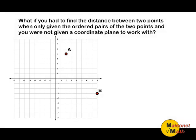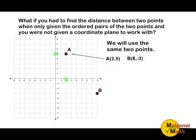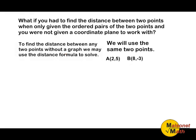Now, what if you had to find the distance between two points when only given the ordered pairs of the two points and you were not given a coordinate plane to work with? We will use the same two points to demonstrate how you would find the distance between two points if they were not shown on the coordinate plane. The ordered pairs of those points would have to be given. Point A is located at x = 2 and y = 5. For point B, the x value is 8 and the y value is negative 3. Now that we know the location of these two points, we may use the distance formula to solve.